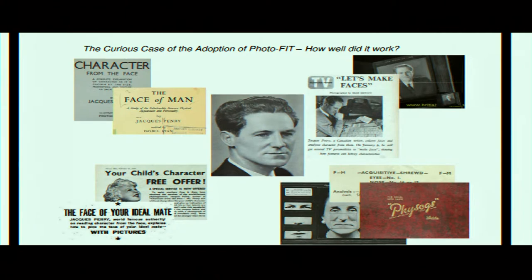He realises quite quickly that there's money in this, so he writes a book — Character from the Face — subtitled 'A Complete Explanation of Character as it is shown by the size, proportion and texture of each feature.' Most of the book is pictures of eyes and noses and mouths, saying this type of ear in conjunction with this type of mouth will probably indicate this type of person. What Penry is essentially peddling is physiognomy — the long-standing 19th century idea that inward character traits are evident in the outward body. He then develops from this a long and very varied career, but essentially saying the same thing.